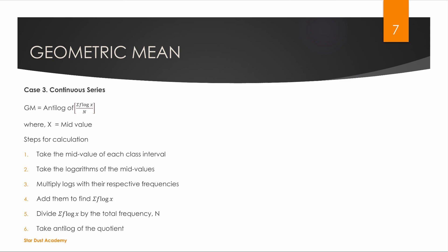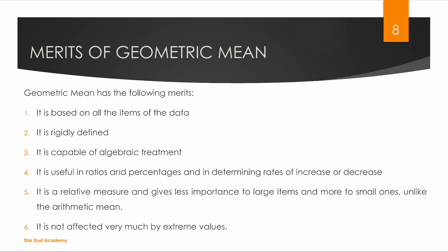If we have a value from 10 to 30, we change the geometry. The geometric mean is based on all the items of data. If we have a value from the geometry, then we can create all the data. Next, it is Rigidly Defined.